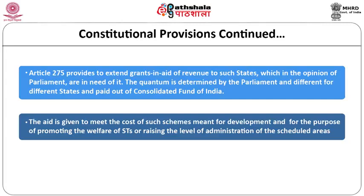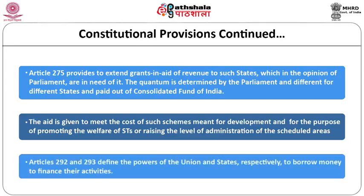There are certain other articles in the constitution relevant to center-state financial relations. Articles 292 and 293 define the power of the union and states respectively to borrow money to finance their activities. Article 292 relates to the union government, and Article 293 relates to states — this has also been a very controversial area.